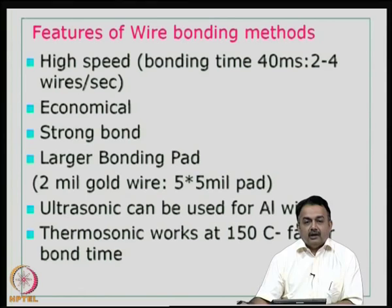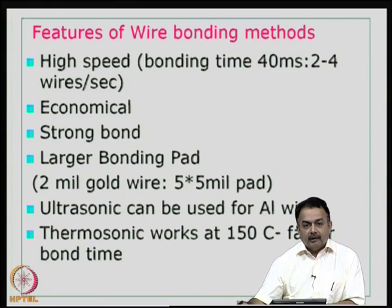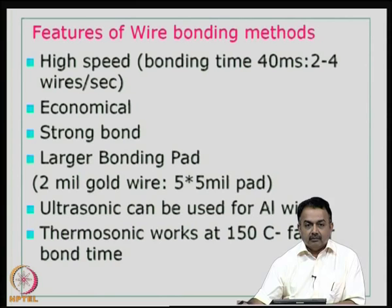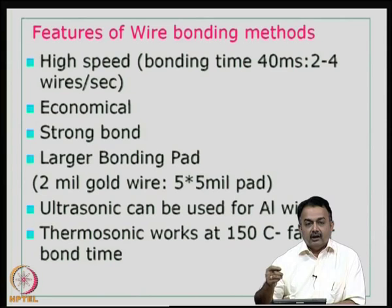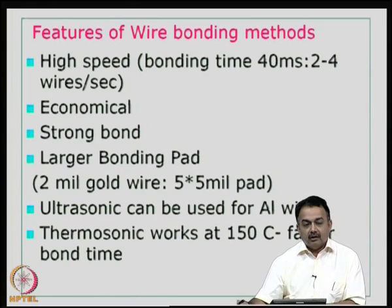You can see that the wire bonding process in the industry depends on high throughput. Typically we are looking at something like 60 to 70 hits or wires per minute. It has to be very fast and accurate, and all the processes are to be in tandem. If it is a ball bonding process, the formation of the ball, the formation of the loop, and then the stitch bond at the other end should occur in perfect tandem without any misalignment. The features of wire bonding are: it should be high speed, economical, strong bond, quality reliable bond. Obviously you have to do some post-wire bonding quality checks continuously.